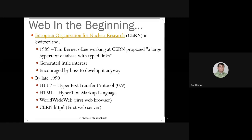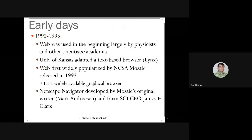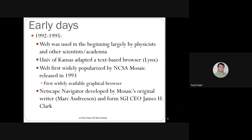Between 1992 and 1995, the web was largely used by physicists and other scientists in academia — it didn't have the widespread use we see today. At the University of Kansas, a text-based browser called Links was developed, which even early programmers used via SSH or telnet to connect to web pages.